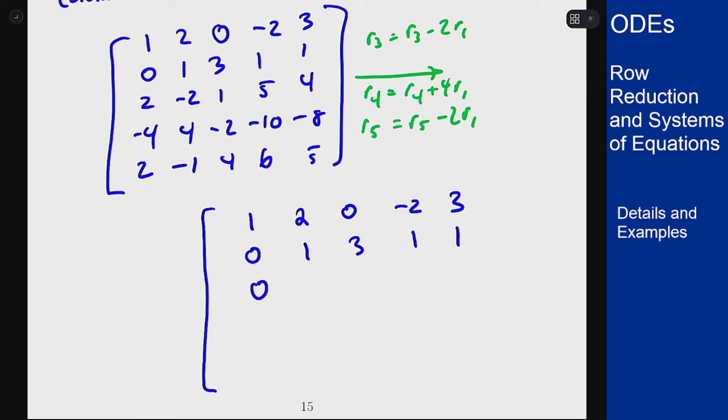So 2 minus 2 is 0. Minus 2 minus 4 is negative 6. 1 minus 0 is 1. 5 minus negative 4 is 9.